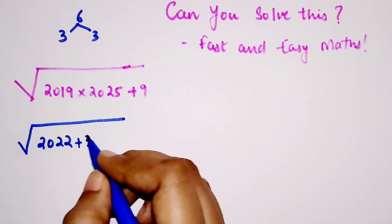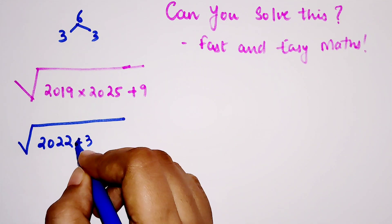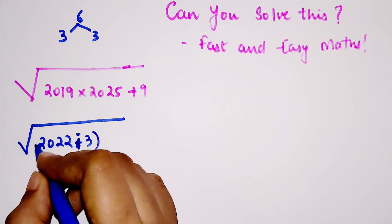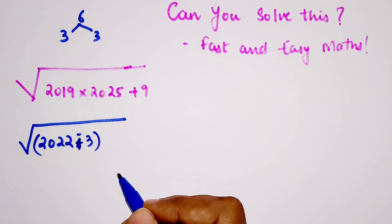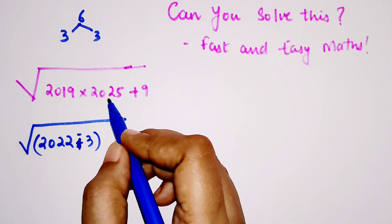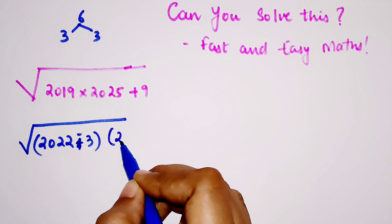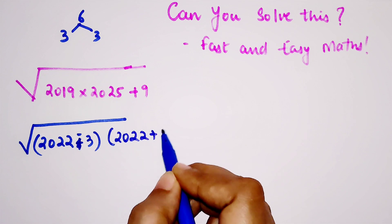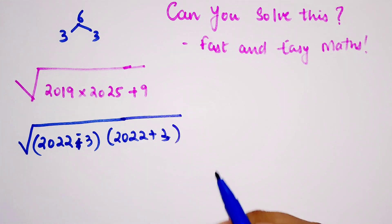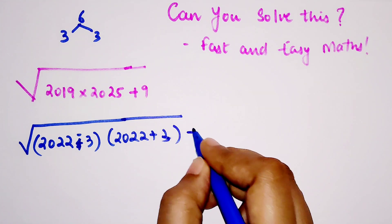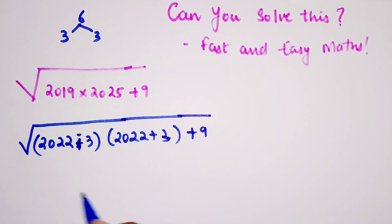So when I subtract three from 2022, I get 2019, correct. And when I add three to 2022, I get 2025. And plus nine we'll write as is.